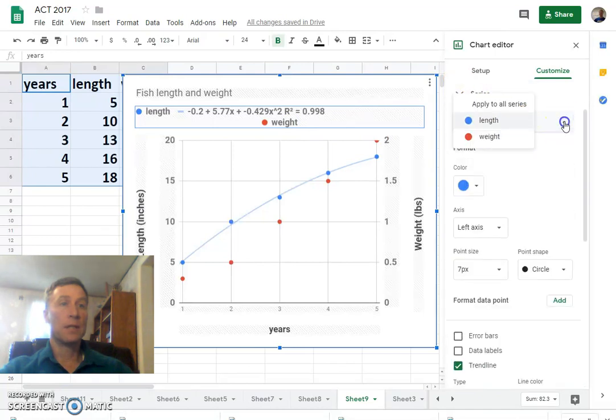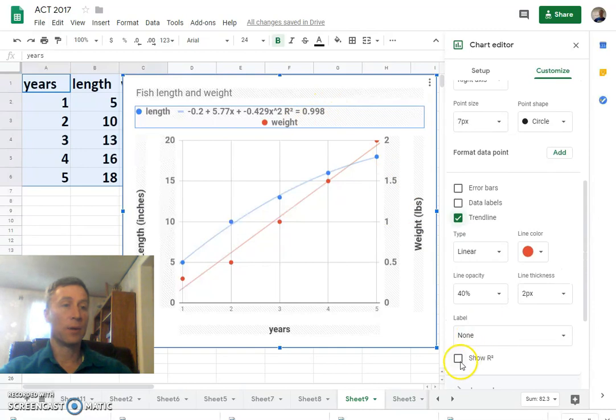So in series, we'll change that to the weight, and it's on the right axis. We'll add a trend line there. Linear does not fit that great. Let's add the R squared just so we can see. R squared is 0.98. That's really actually pretty good.